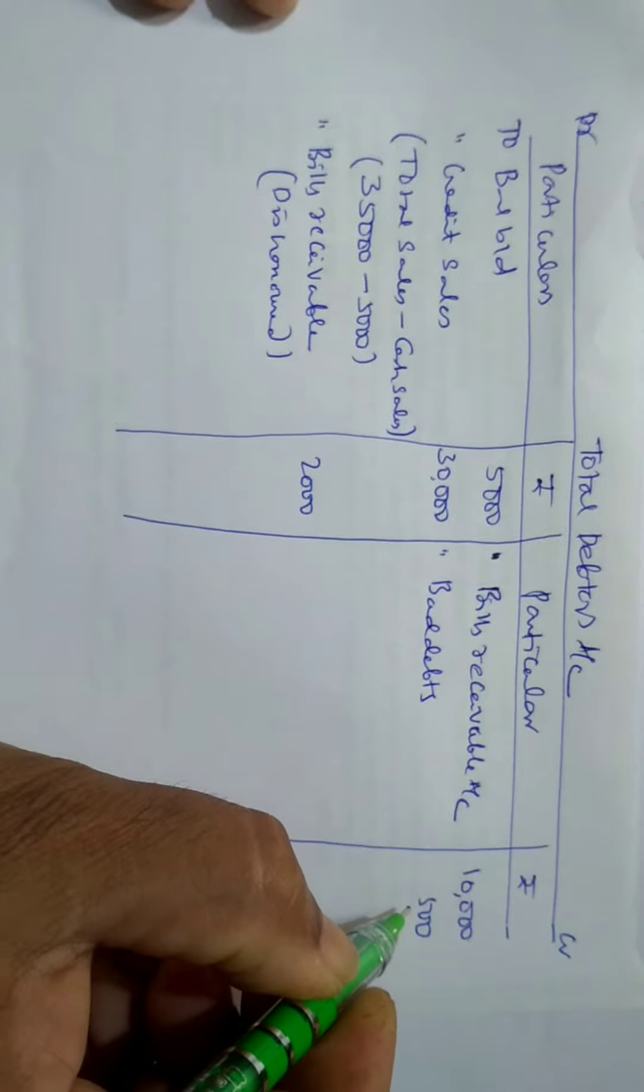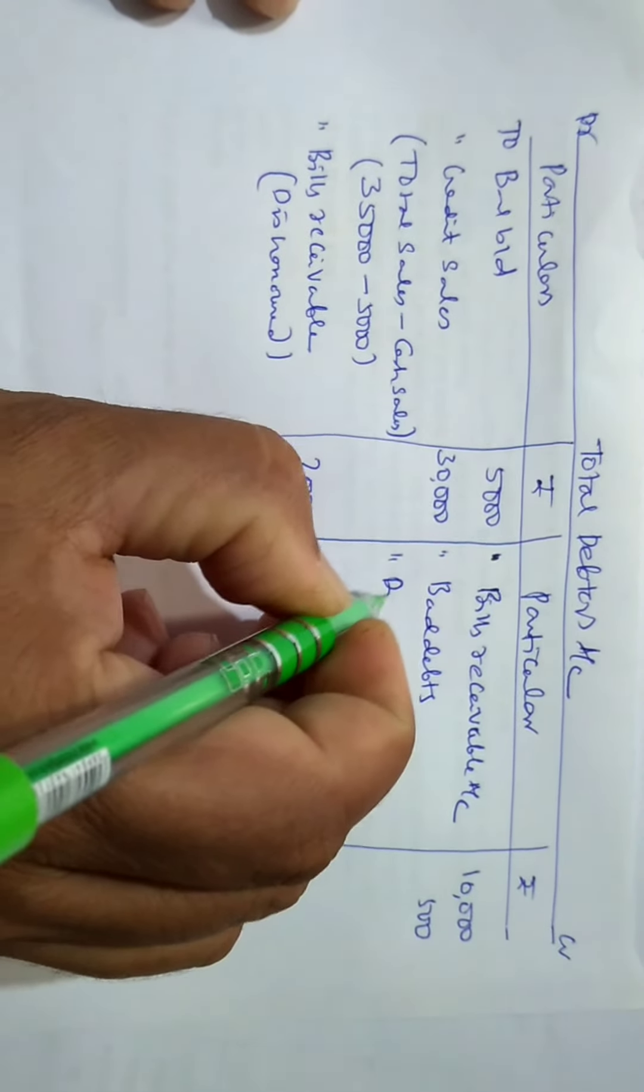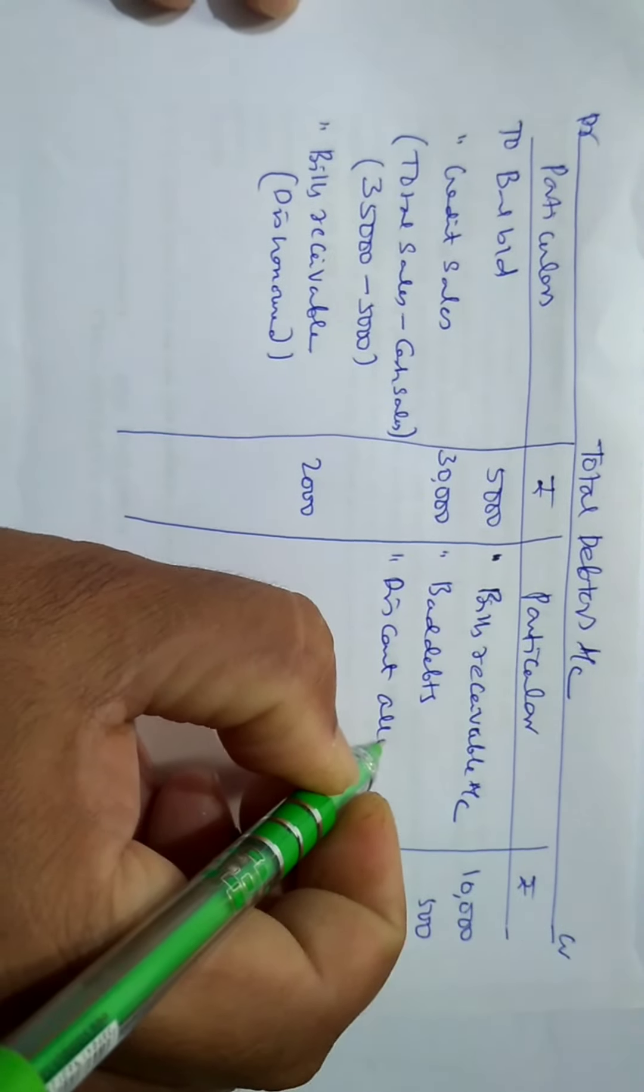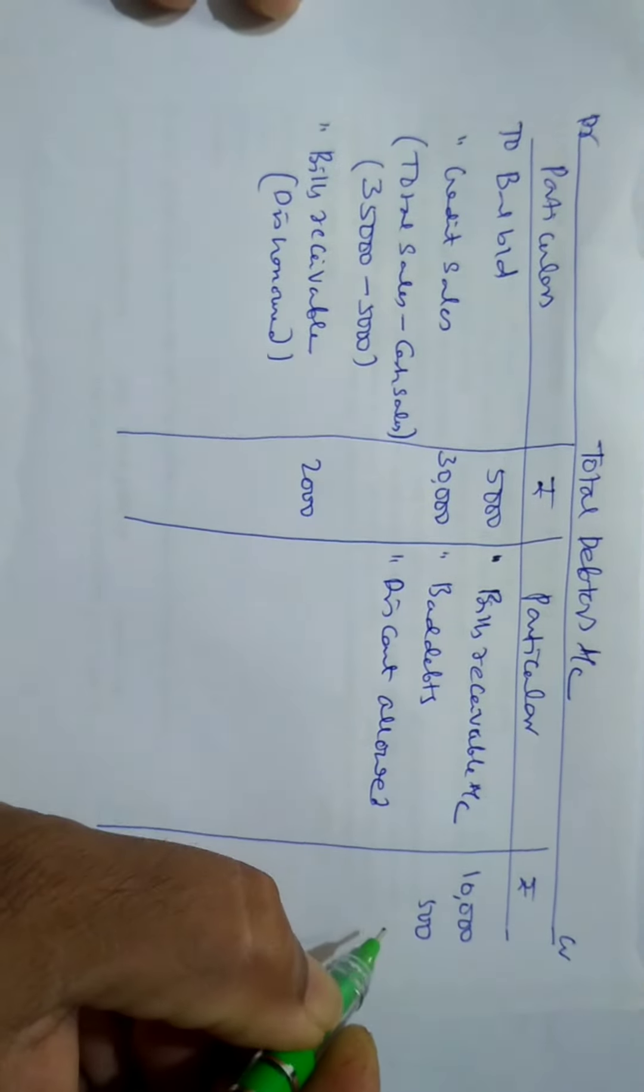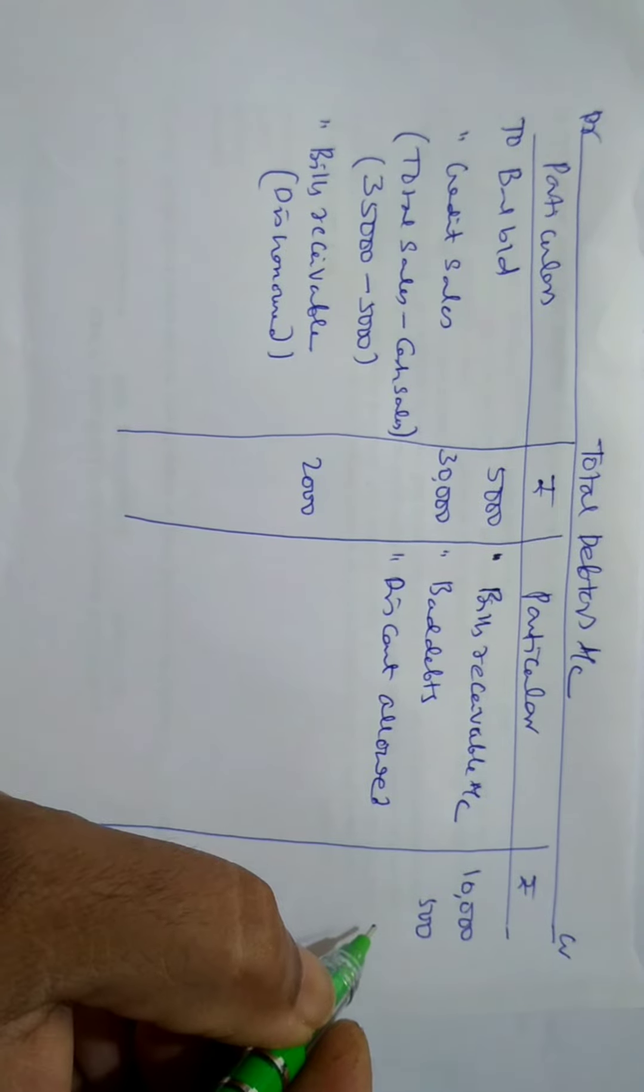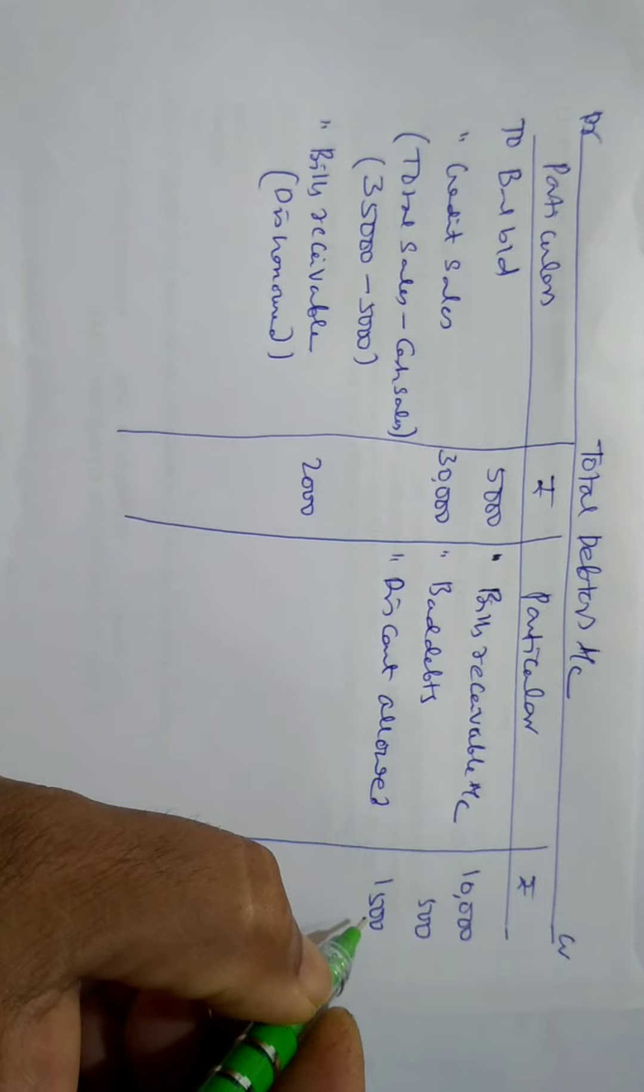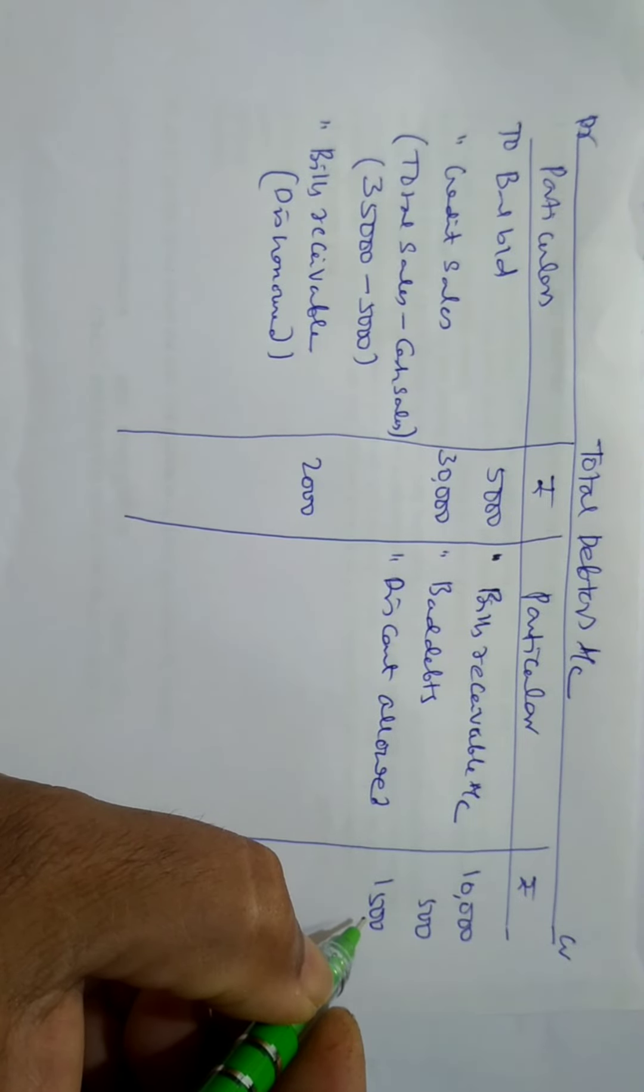And discount allowed must be taken, credit side discount allowed, discount allowed is Rs. 1,500 and provision for doubtful debts must not be taken.